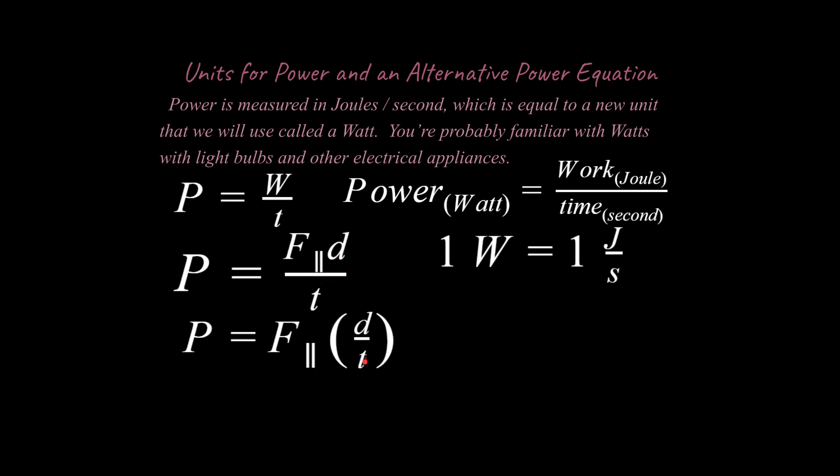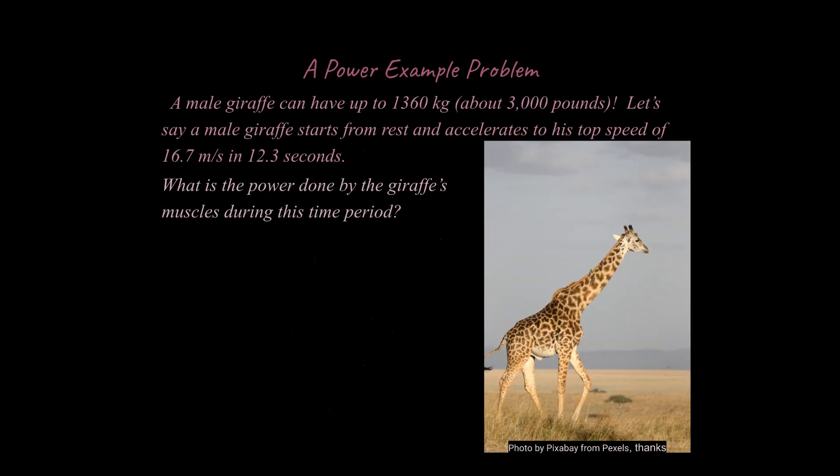One other thing I want to show you is an alternative version of power. If we put the d over t, like delta x over delta t, then you could simplify that to speed. We're not going to use this version of power today because it's actually really easy if you have something with constant speed and you can figure out the force involved. What we're going to do instead is more of a traditional power problem that involves using the work and even kinematics equations.